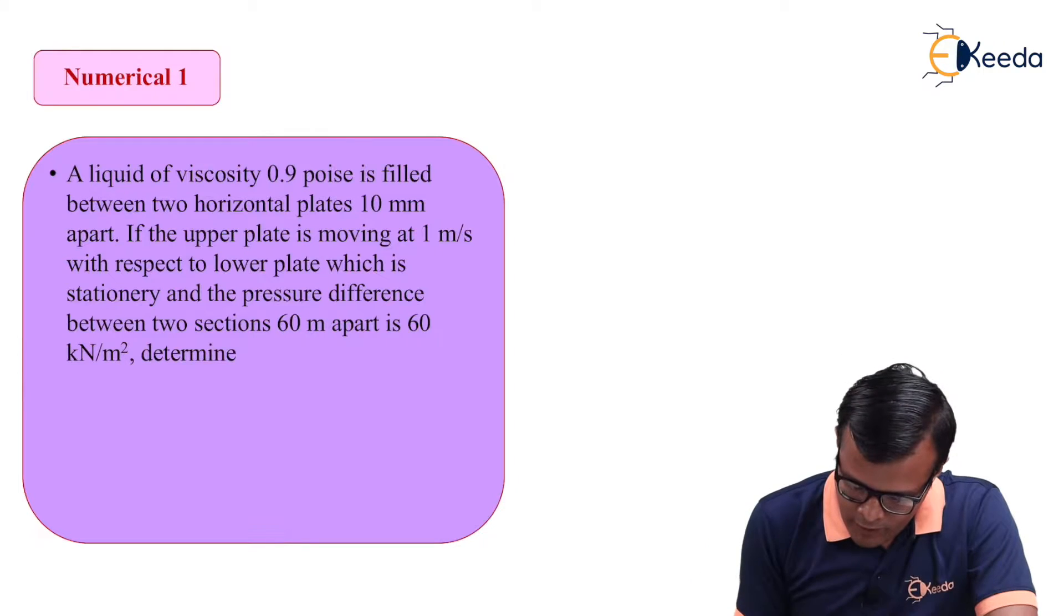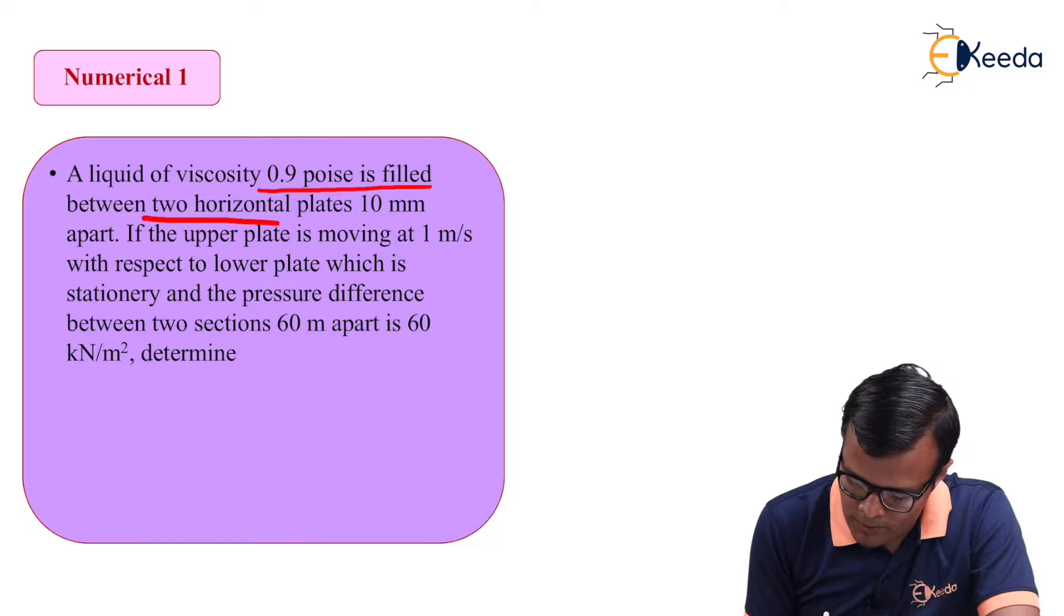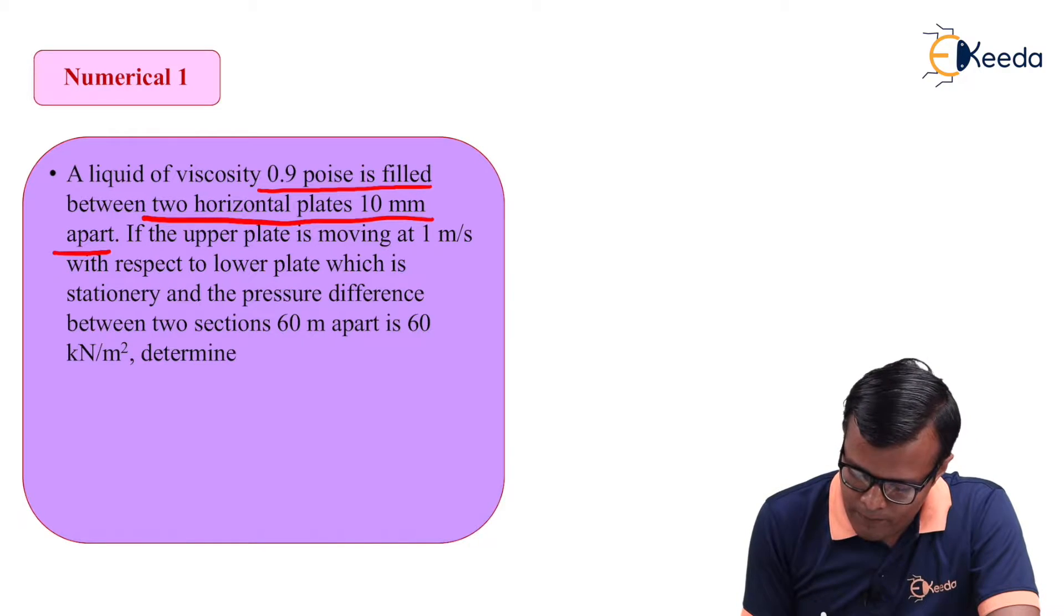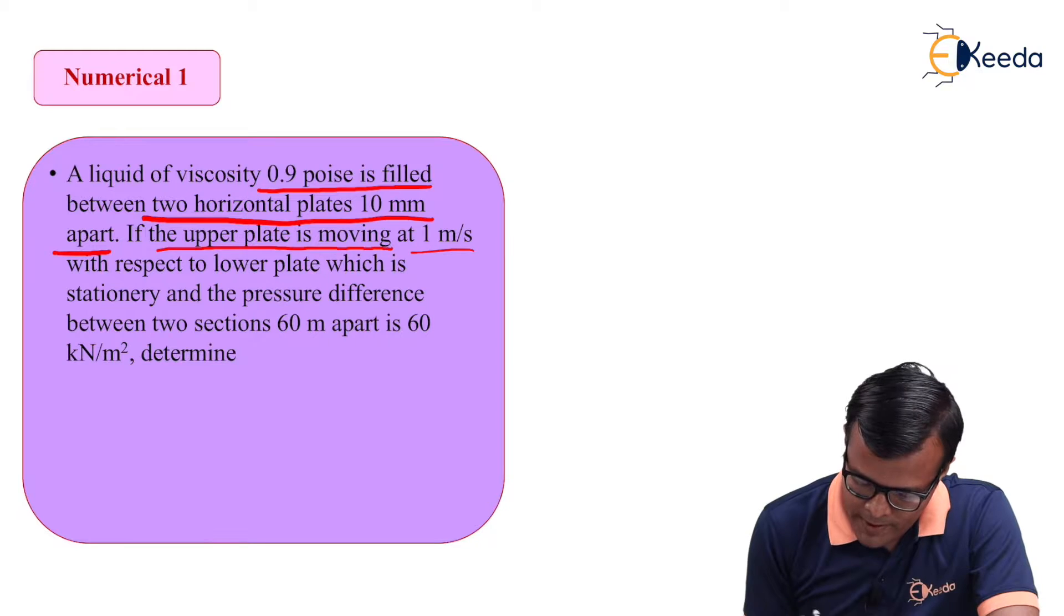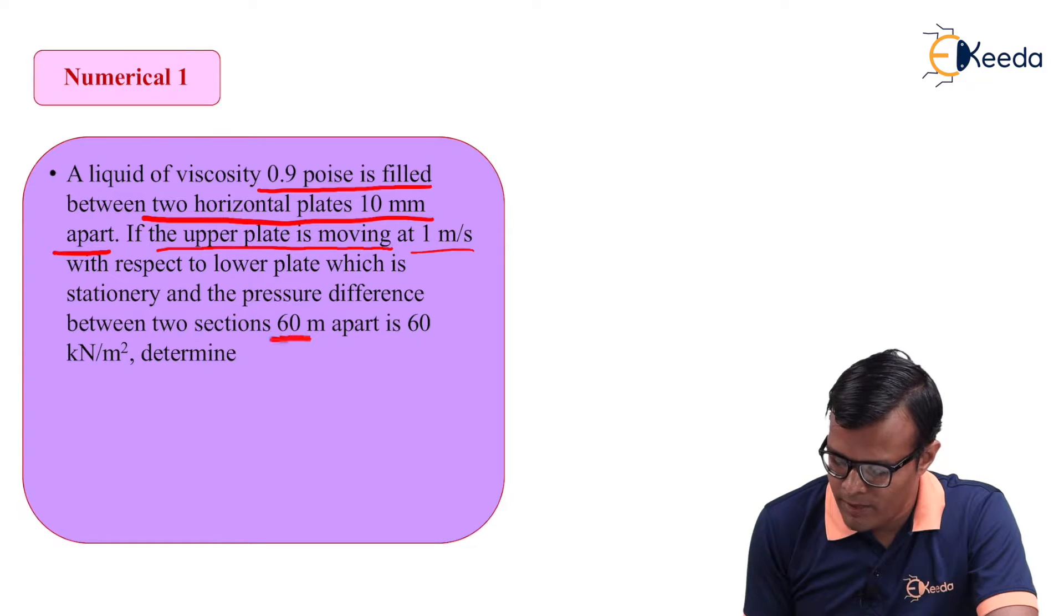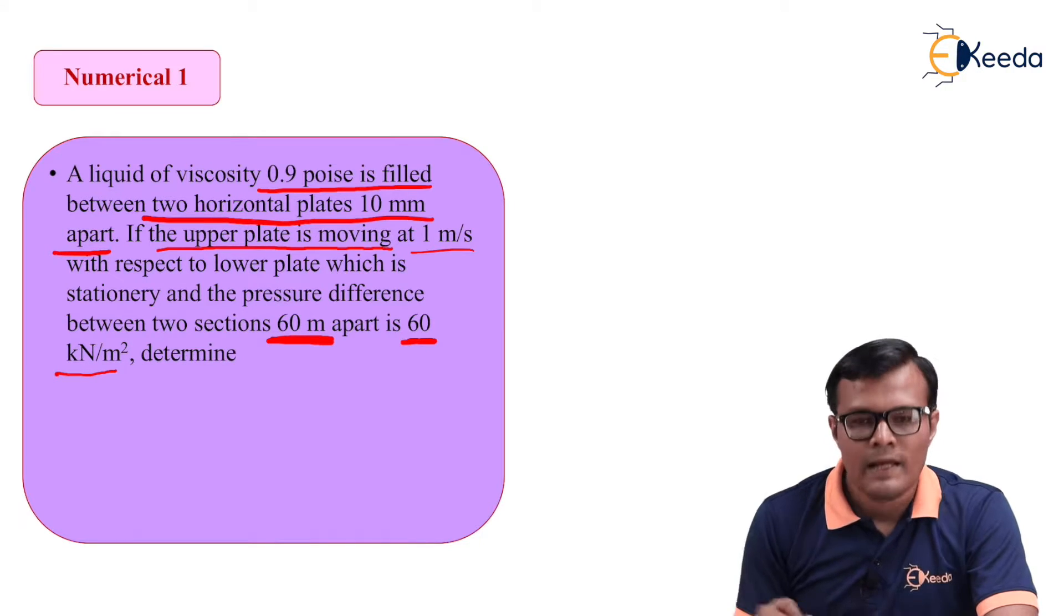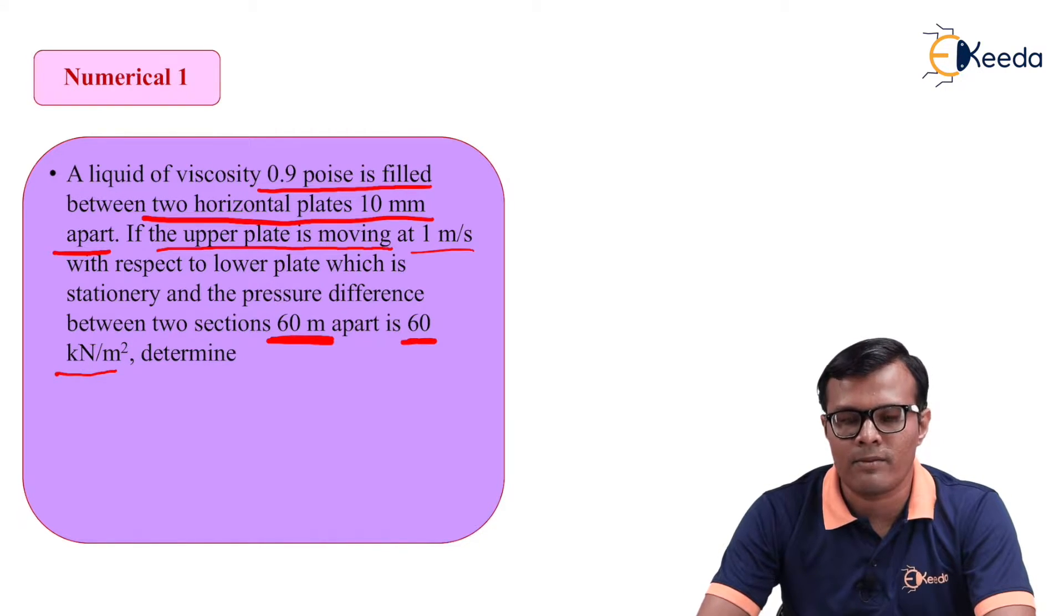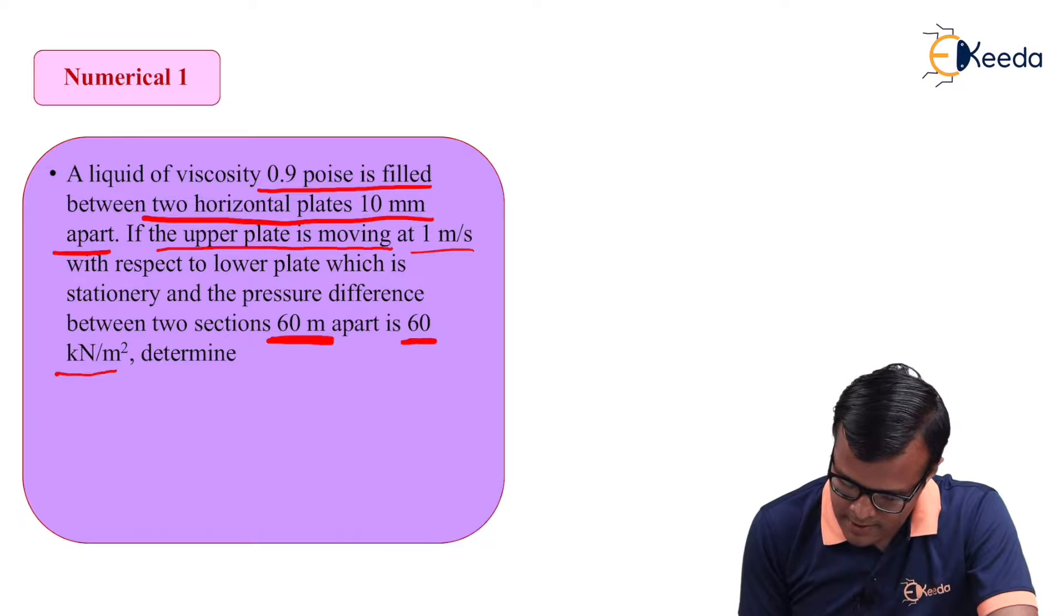Let's see the numerical. A liquid of viscosity 0.9 poise is filled between two horizontal plates 10 mm apart. If the upper plate is moving at 1 m/s with respect to lower plate which is stationary and pressure difference between two sections 60 meter apart is 60 kN per meter square. This pressure difference is ΔP. But ΔP with respect to how much distance? That distance is 60 meter.